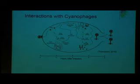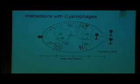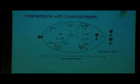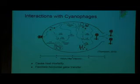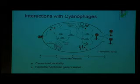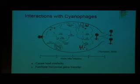One group of organisms that Prochlorococcus interacts with in the oceans are called phages, and these phages essentially inject their DNA into the host cell and then hijack the host system to reproduce the phages. This has two important implications for the Prochlorococcus cells. The first is to cause host cell mortality, because when the phages are released the cells are lysed or burst, which kills them.